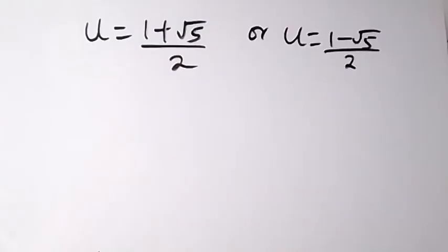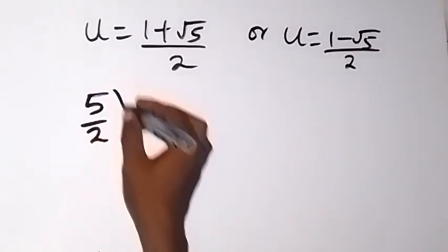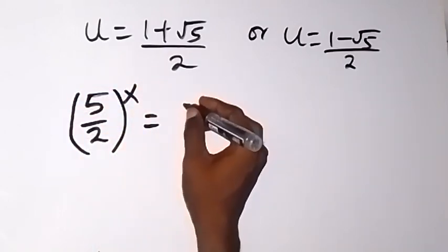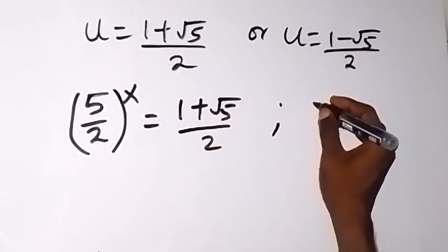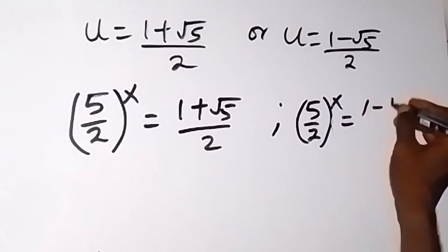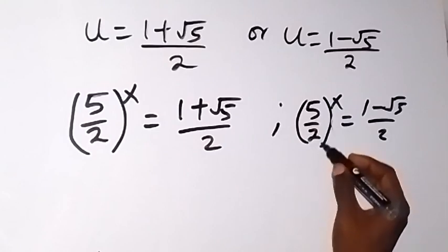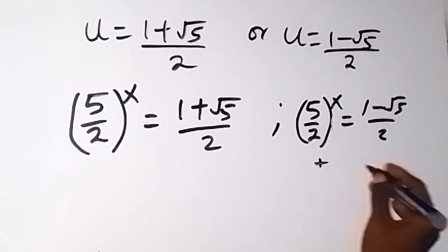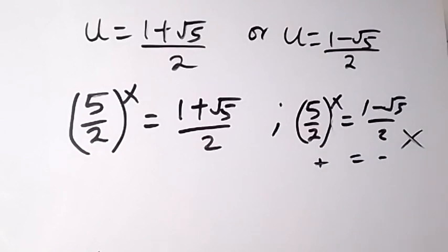We have 2 values of u here. Don't forget that u is represented as 5 over 2 raised to power x. So we have 5 over 2 raised to power x equals 1 plus root 5 over 2, and also 5 over 2 raised to power x equals 1 minus root 5 over 2. The first value is positive, but the second side is negative — positive cannot equal negative — so there is no solution from that case.